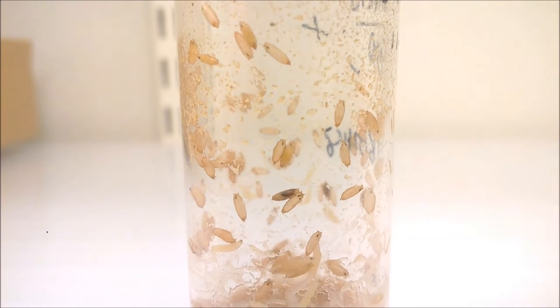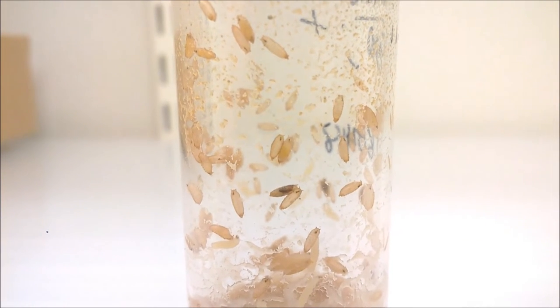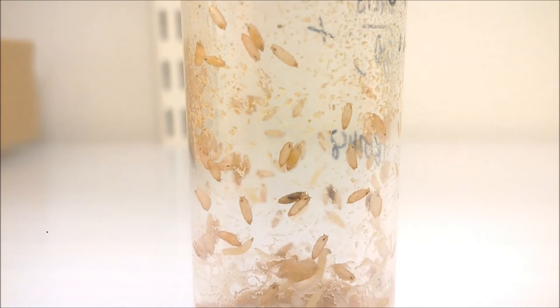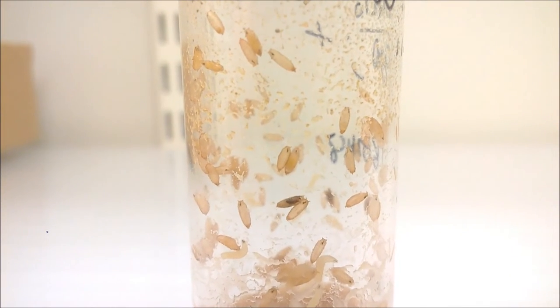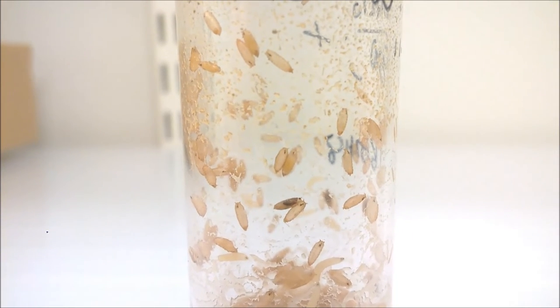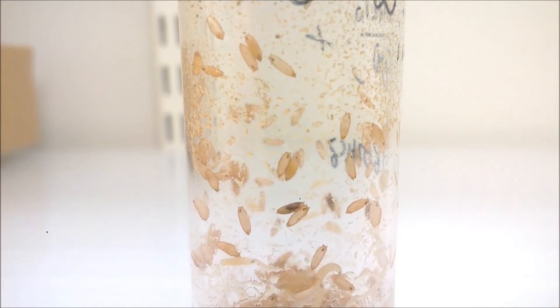In the middle you see a pupae, which is darker. It means that an adult is about to be ready. Soon this adult will emerge. This adult and all the other adults will be selected based on their phenotypic features.